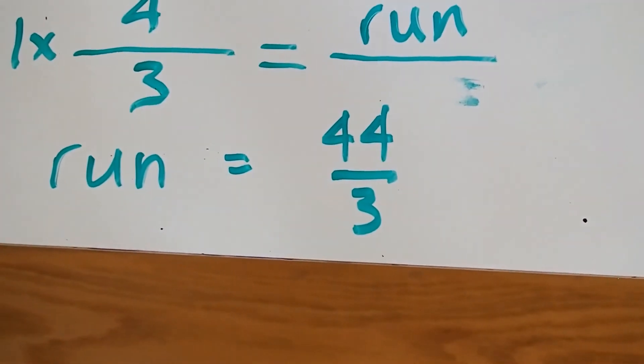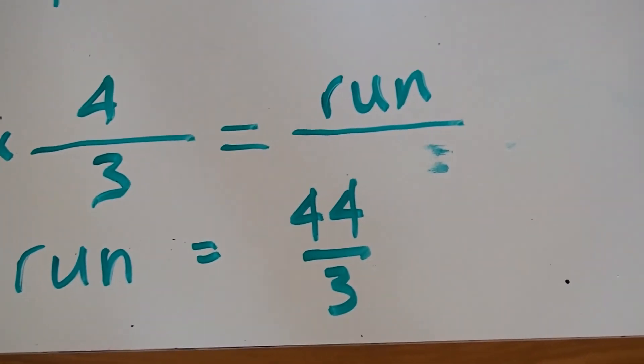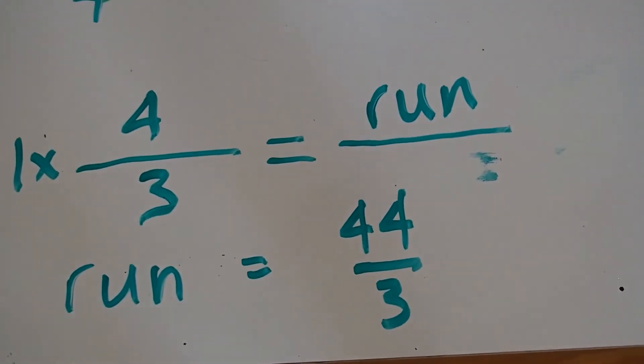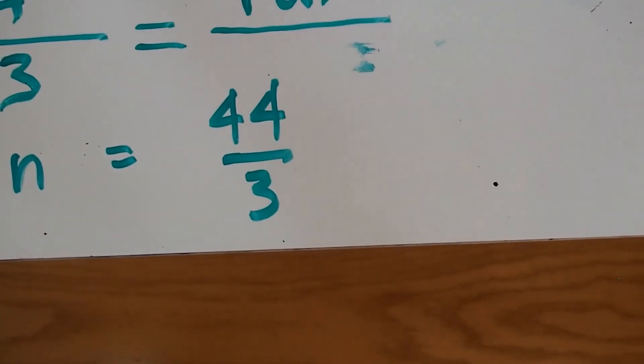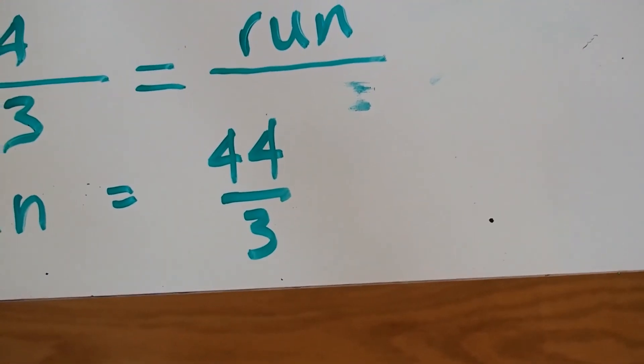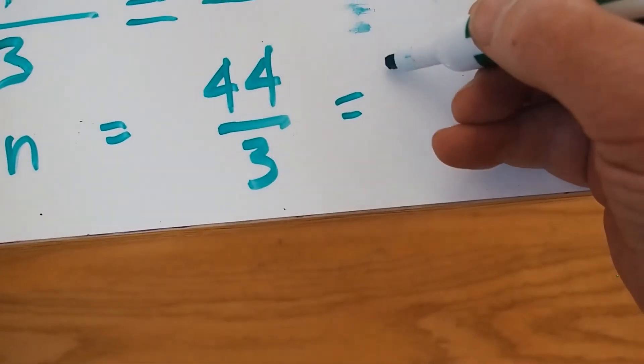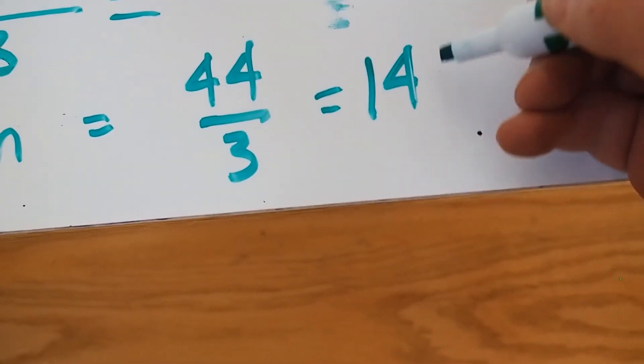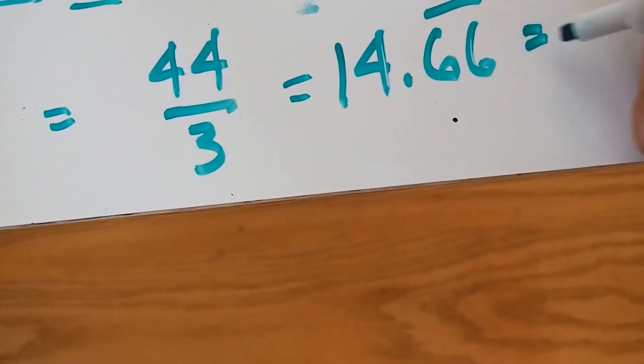Or run equals forty-four over three. So I can calculate that. I'll just get my phone. Forty-four divided by three, according to my phone, is fourteen point six repeated, which is fourteen and two-thirds.